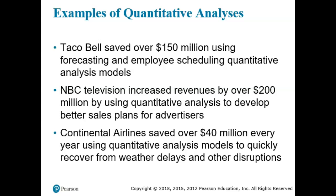Some examples of its use over the years: Taco Bell saved over $150 million using forecasting and employee scheduling quantitative analysis models. NBC Television increased revenues by over $200 million by using quantitative analysis to develop better sale plans for their advertisers. And Continental Airlines saved over $40 million every year using quantitative analysis models to quickly recover from weather delays and other disruptions.